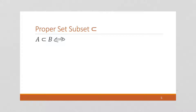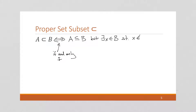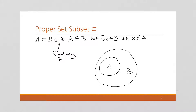A is a proper subset of B if and only if A is a subset of B, and there exists an element X in B such that X is not an element of A. So if we draw B containing A, we call this a proper subset because there exists an X in B that's not in A. These definitions use what's called the element argument, where we talk about a generic element in the set — in this case X, but it could be any variable.